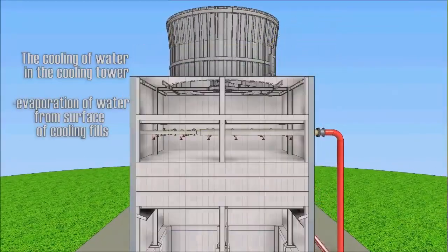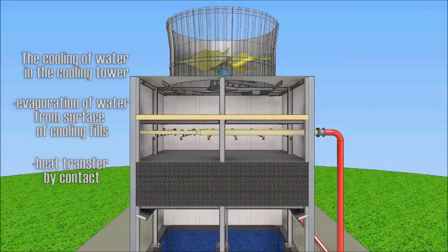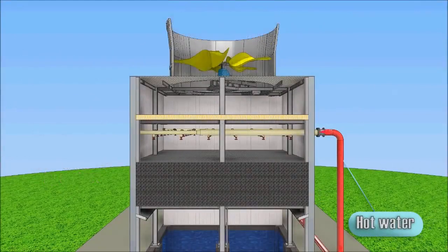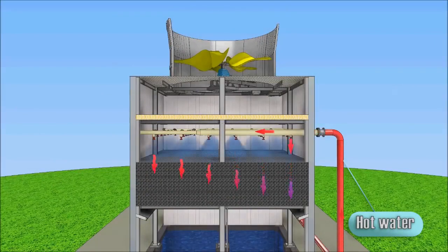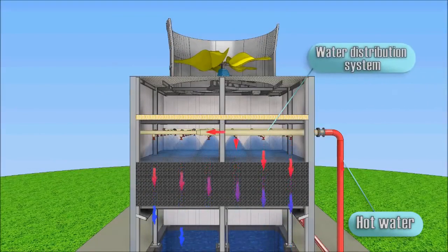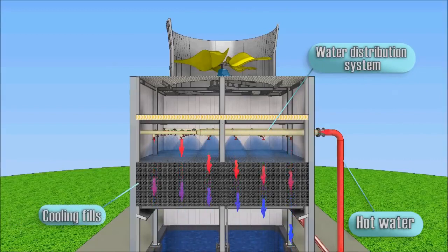Heat transfer occurs by contact with air. Hot water from various sources such as machines or heating processes flows through pipes to the distribution system of the cooling tower which produces even water distribution to the area fixed by the spray nozzles.